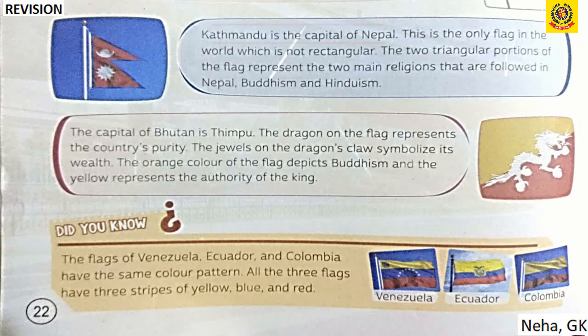Kathmandu is the capital of Nepal. Nepal has the only flag in the whole world that is not rectangular in shape — it has two triangles. The two triangular portions represent the two main religions followed in Nepal: Buddhism and Hinduism.